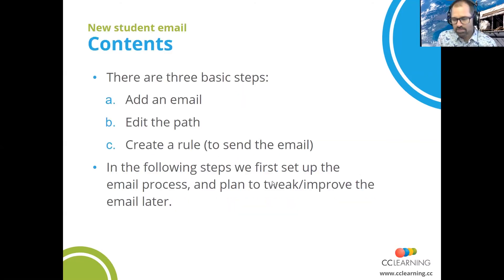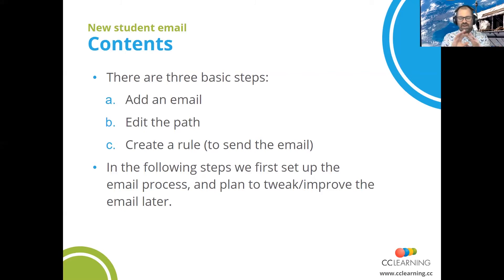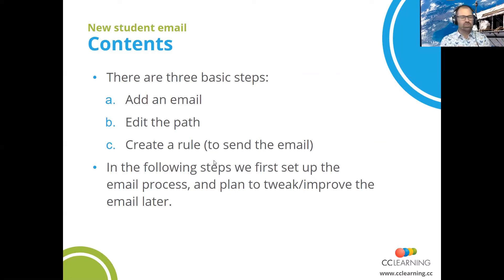There are three basic steps. I'll try and do this fairly quickly because this is the sort of thing you might want to watch on video relatively frequently. If you get this basic process right, you're going to be set — you'll be able to create whatever sort of functionality you need. This is effectively the base-level building block to create a customized workflow and customized email communication with your customers. The three steps are: add an email, edit the path, and create a rule. In the following steps, we'll first set up the email process and then plan, tweak, and improve later.